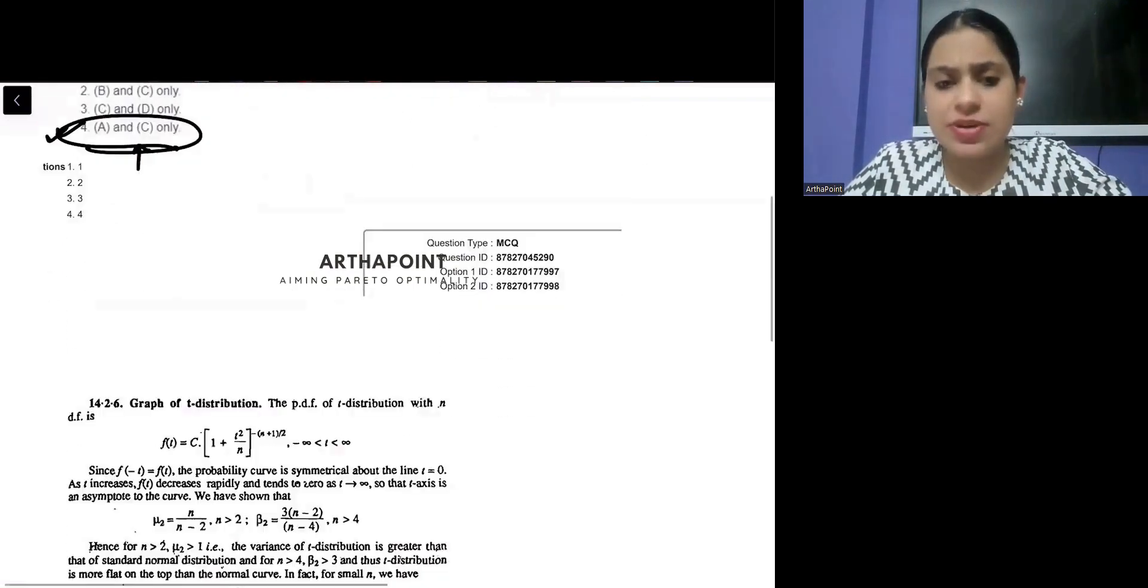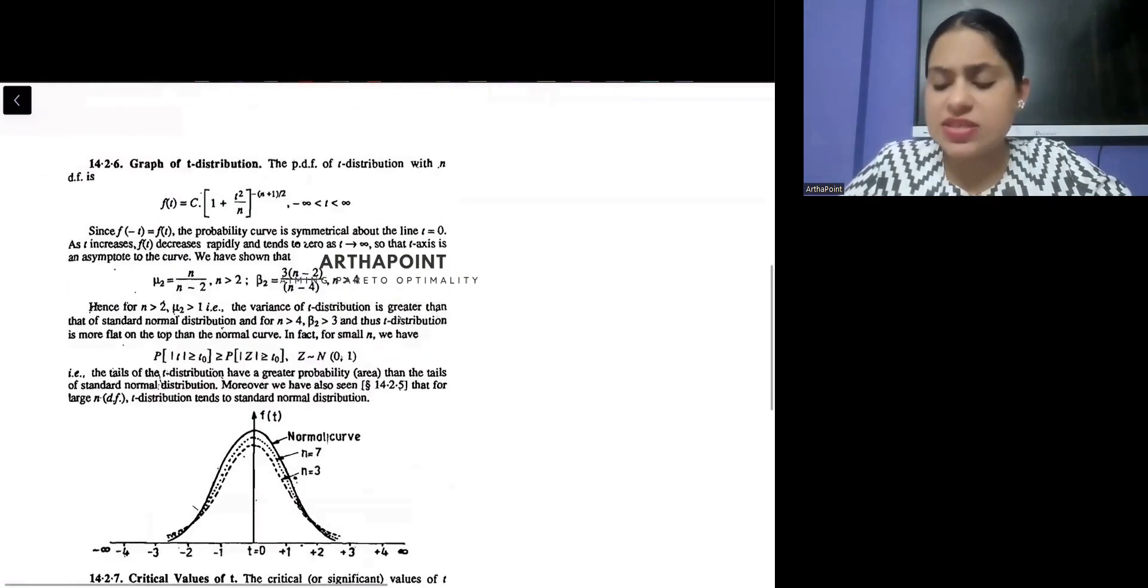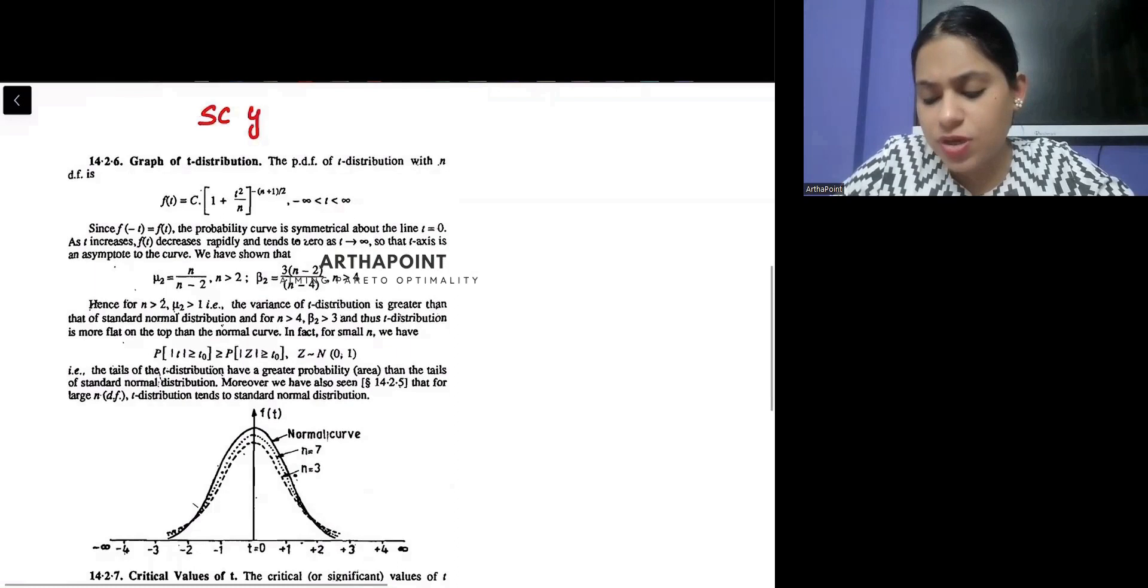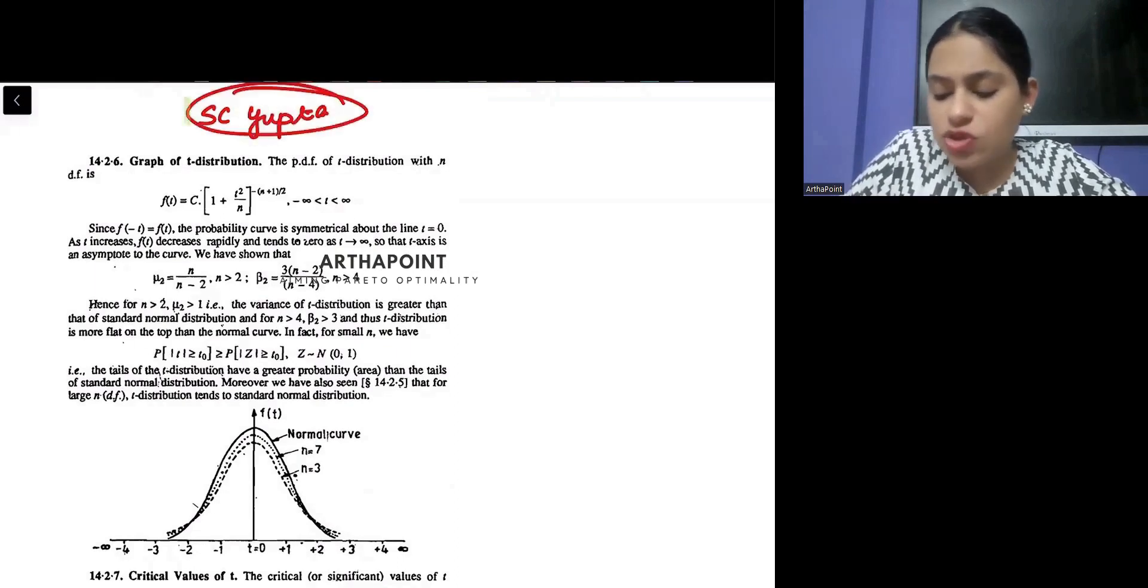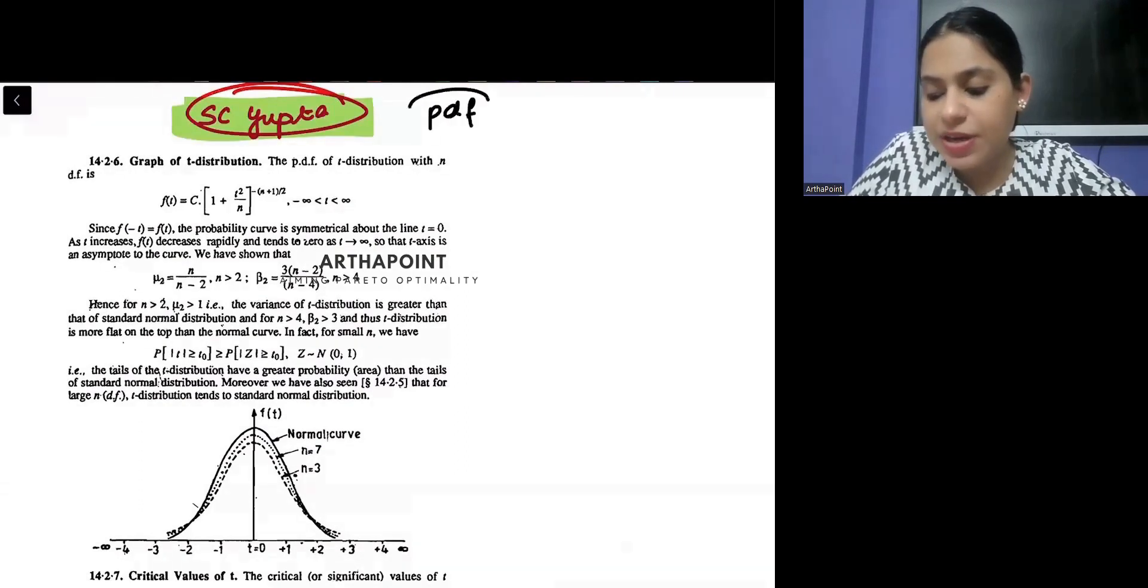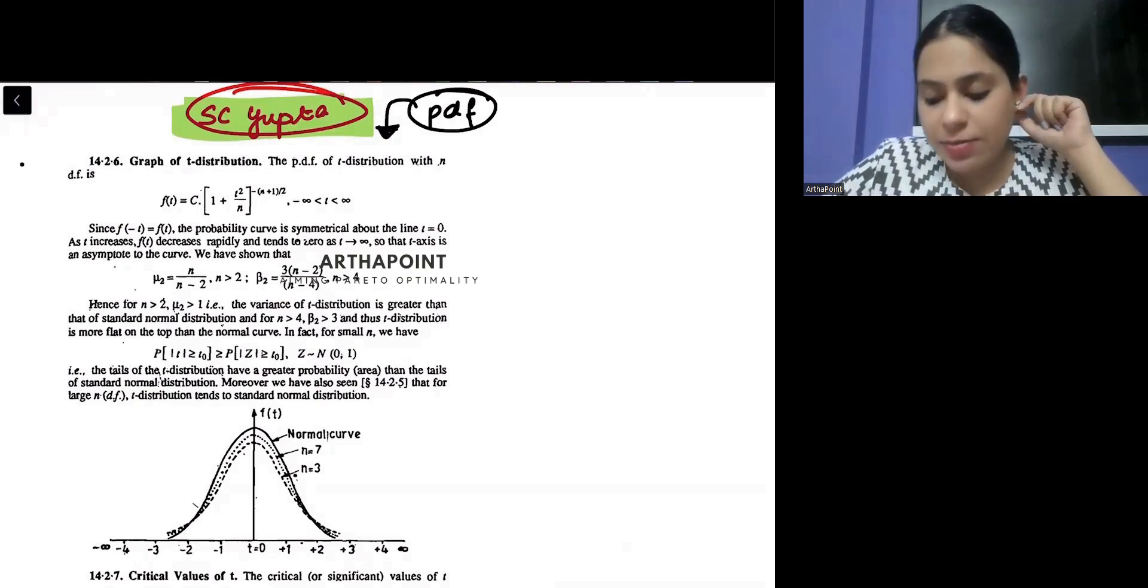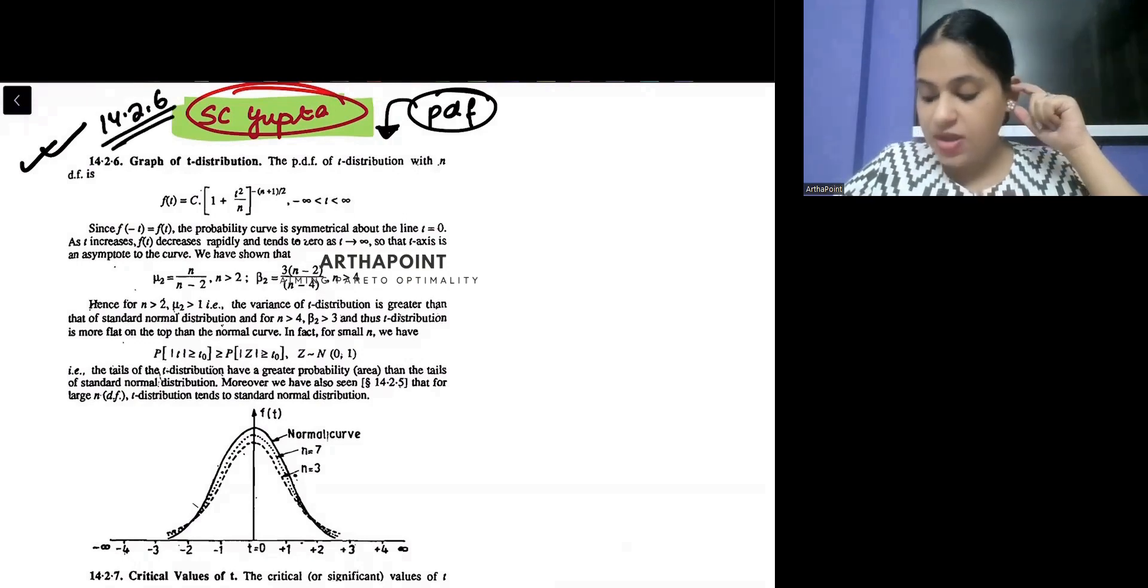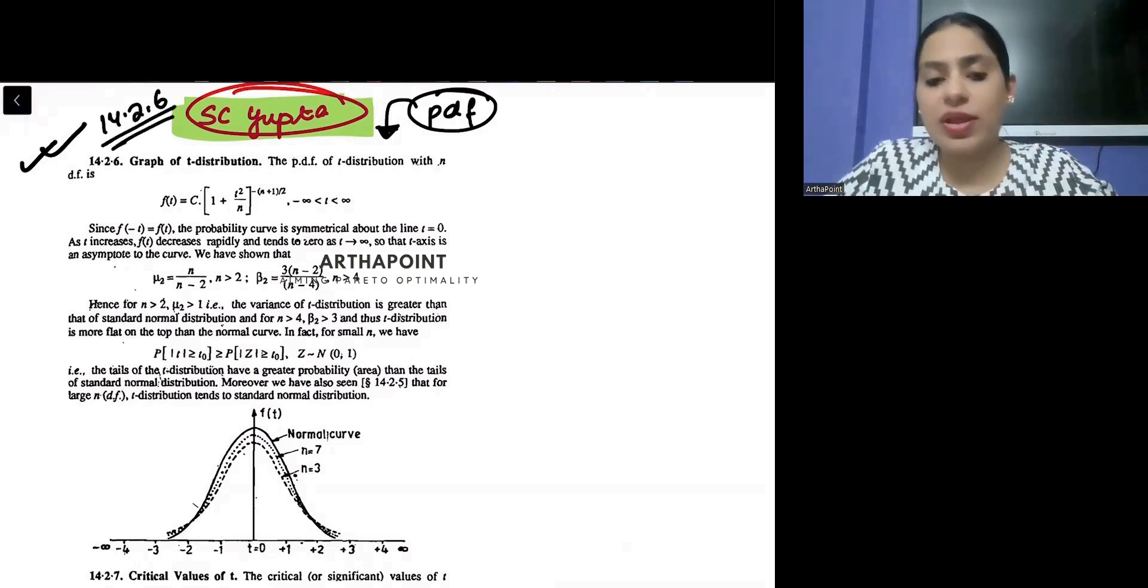So, to prove these statements, I have taken this snip from SC Gupta again and if you just type SC Gupta statistics, you will be able to go ahead and get a PDF of it. You can download that PDF from Google. And here I am referring to the graph 14.2.6 which shows everything together.